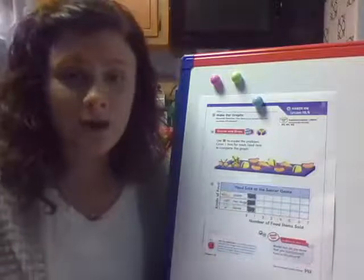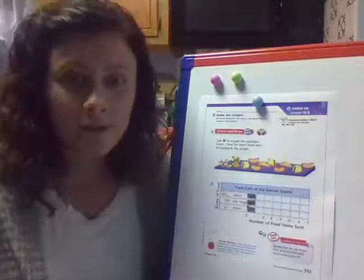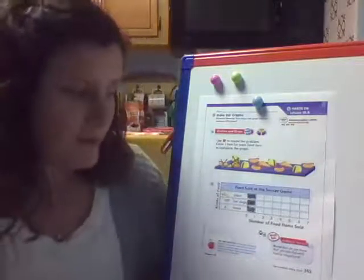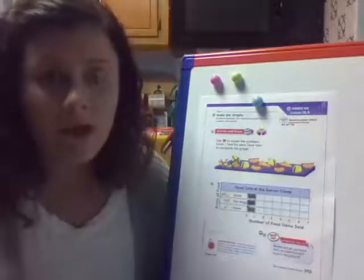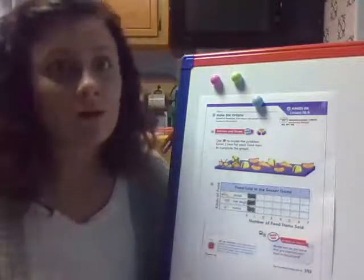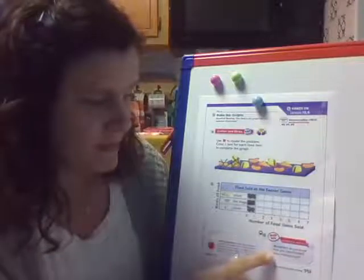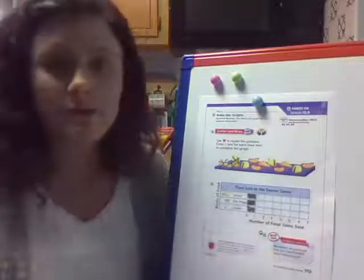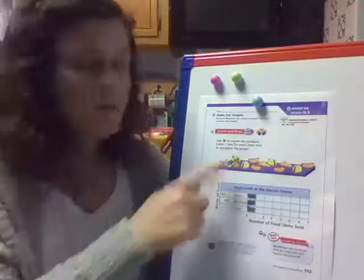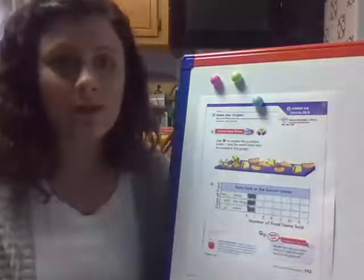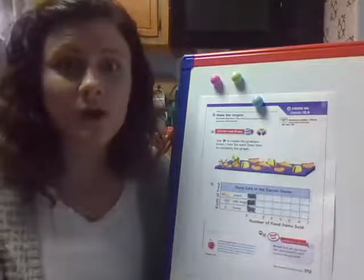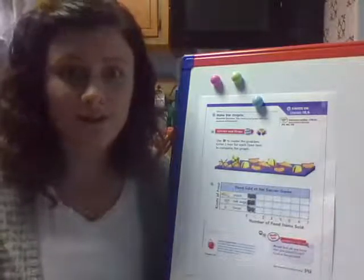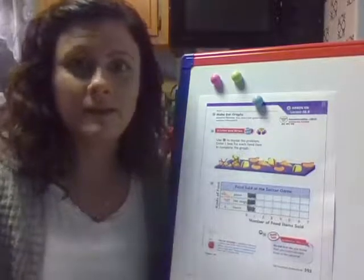So on your own, I want you to finish doing the bar graph. I want you to think about how you know that you counted each thing. That's our question down here: how do you know you colored them? If you didn't X them out, think about how you double checked to make sure that you got all of those done. Go ahead and make your bar graph, friends. Thank you.